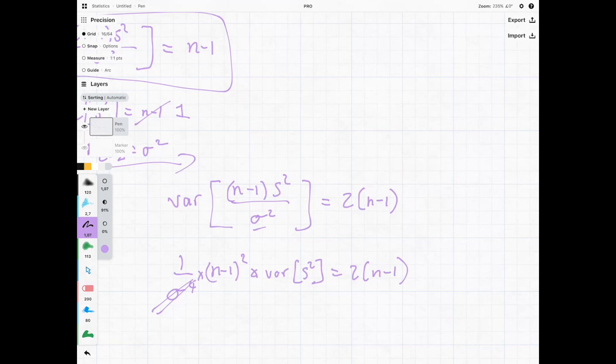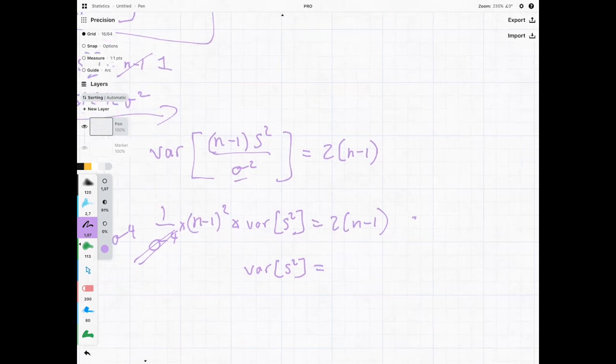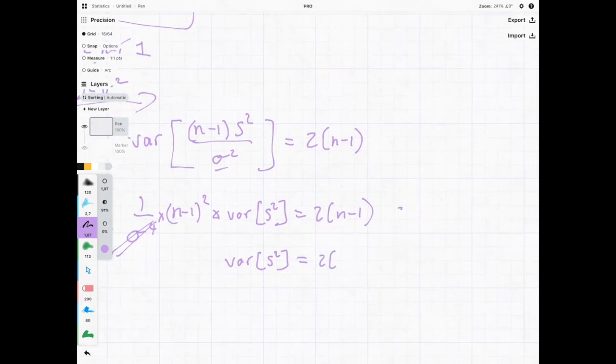If we multiply both sides by sigma four we're going to have, you can just throw sigma four on to that side and then let's divide. So we will have something like this.